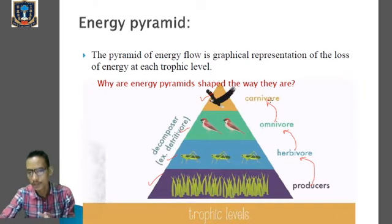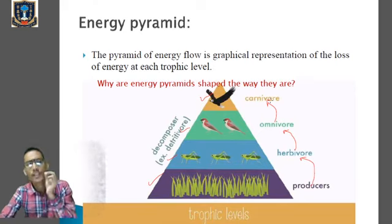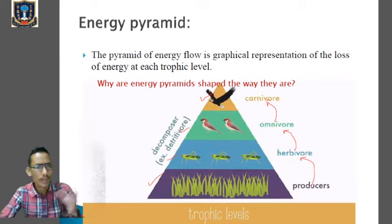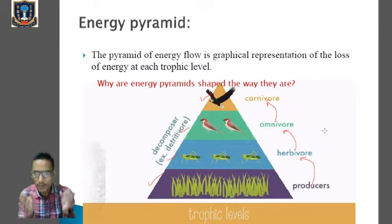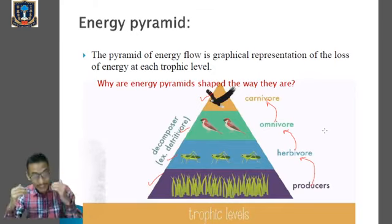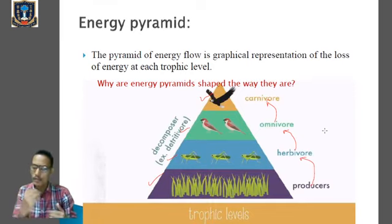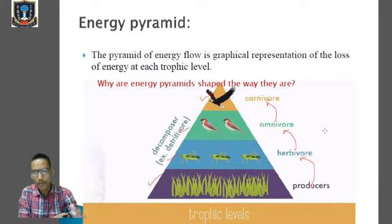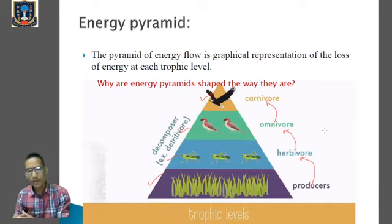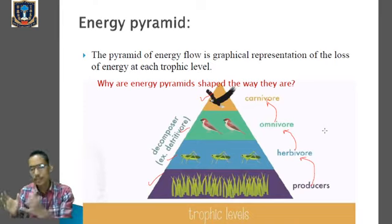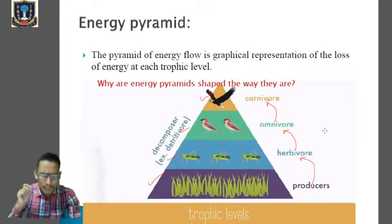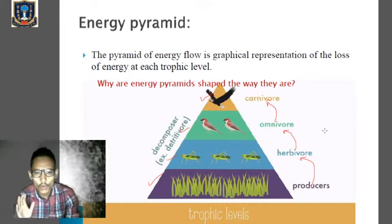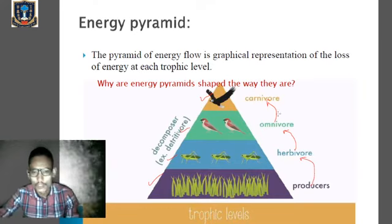In class 10 we learned about the 10 percent law of energy: only 10 percent of energy is transferred from one trophic level to the next. Therefore, the maximum amount of energy is stored by the producers, because they are the ones performing photosynthesis and converting solar energy into chemical energy. Whenever the herbivore feeds on the producers, a small amount of energy is lost; from herbivore to omnivore, similarly a small amount is lost, and this process continues.